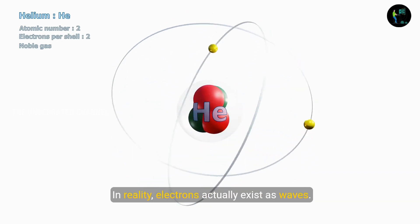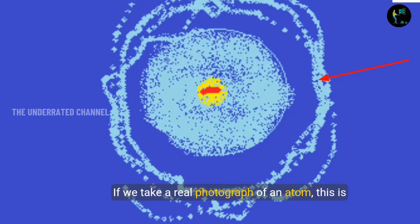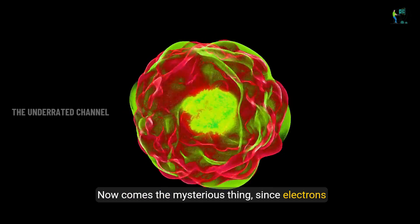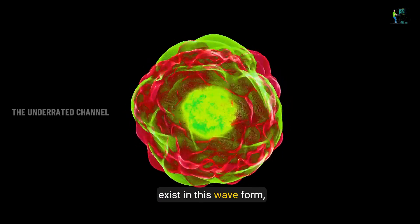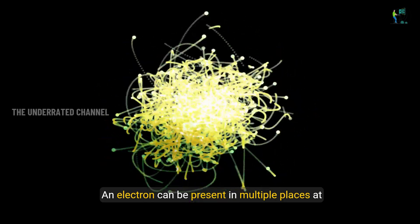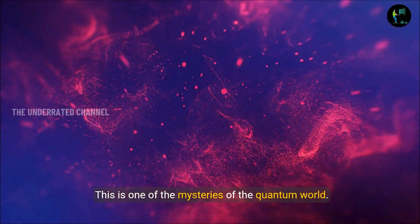In reality, electrons actually exist as waves. If we take a real photograph of an atom, this is what it would look like. Electrons moving as a cloud around the nucleus. Now comes the mysterious thing. Since electrons exist in the waveform, we can't correctly determine their location. An electron can be present in multiple locations at the same time. This is one of the mysteries of the quantum world.